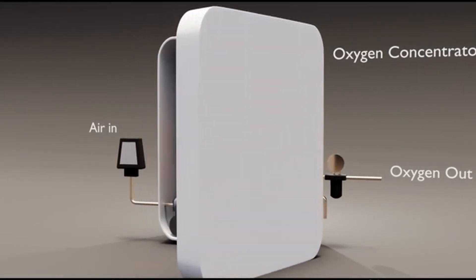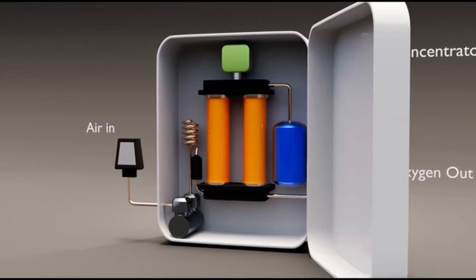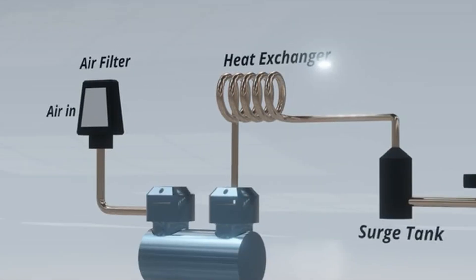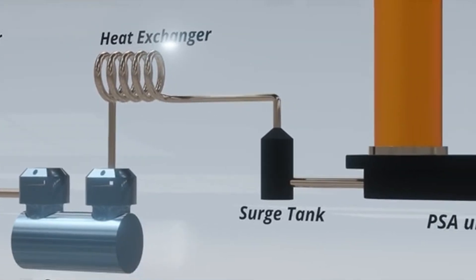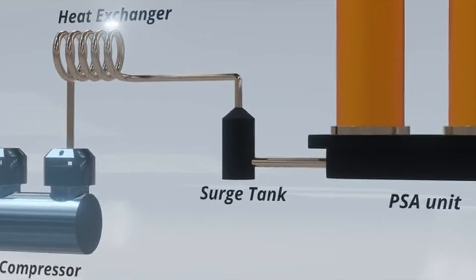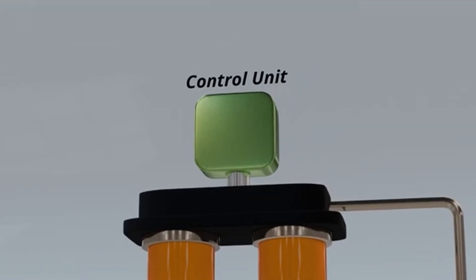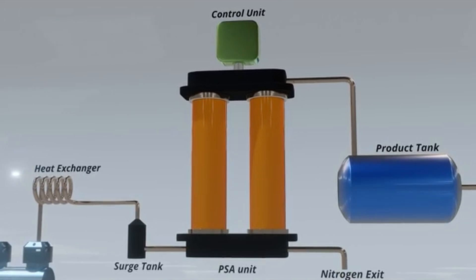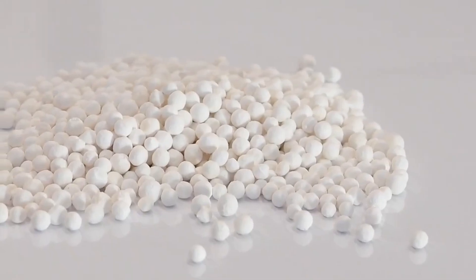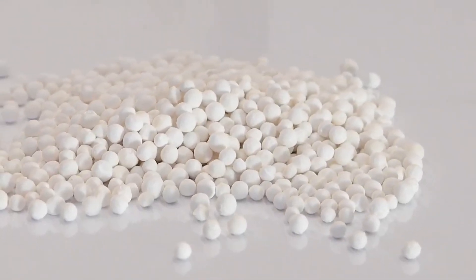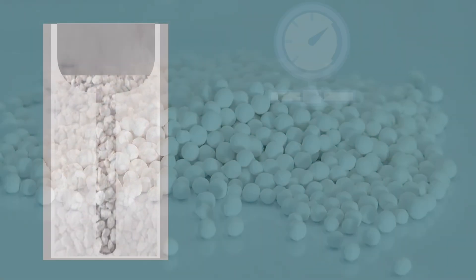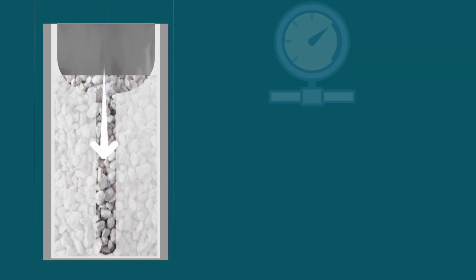A typical oxygen concentrator consists of an air compressor, a charcoal filter, cylinders filled with zeolite granules, a pressure equalizing tank, several valves, and a tube. In the separation of oxygen from ambient air, the leading part belongs to porous zeolite sorbent with a fraction of 0.2 to 0.5 of a millimeter.